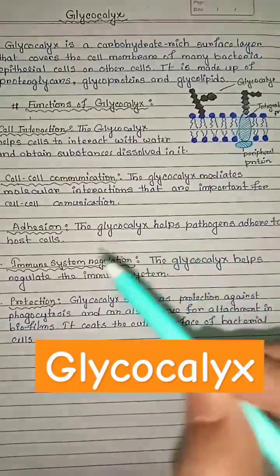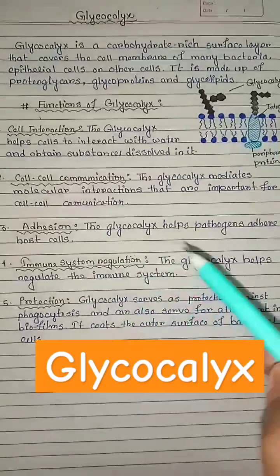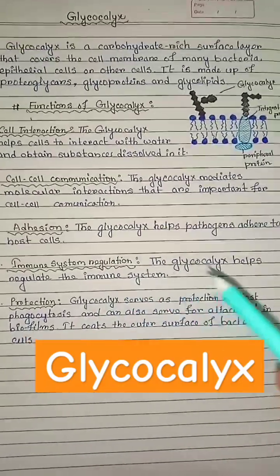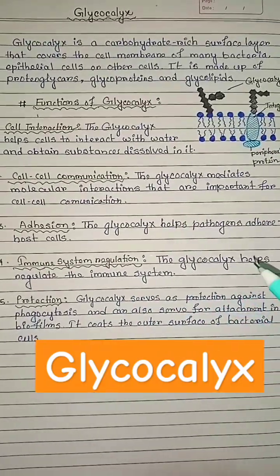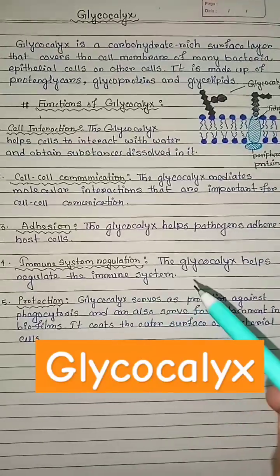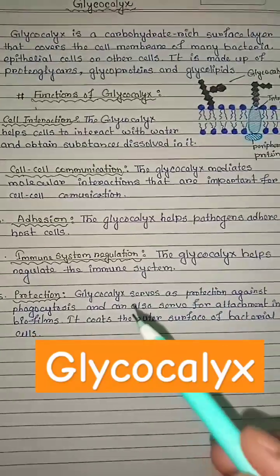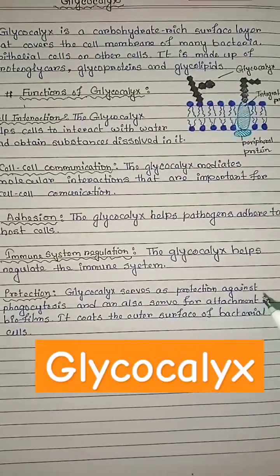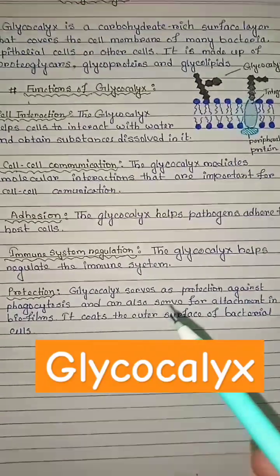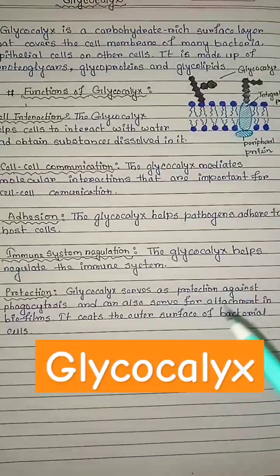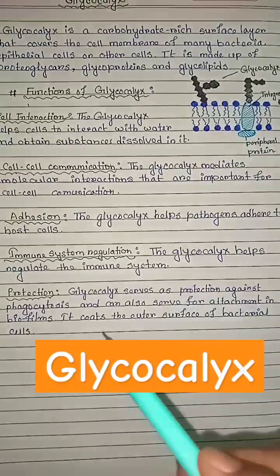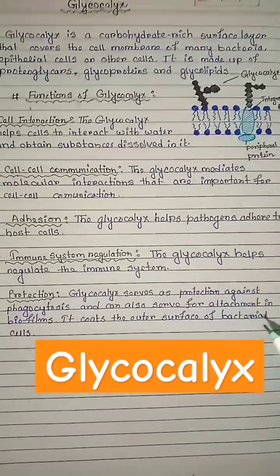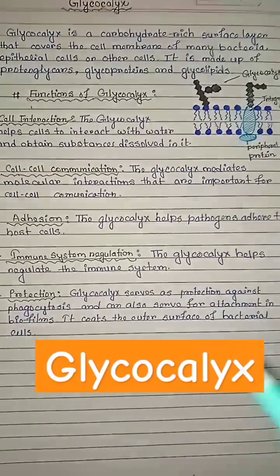Adhesion: the glycocalyx helps pathogens adhere to host cells. Immune system regulation: the glycocalyx helps regulate the immune system. Protection: the glycocalyx serves as protection against phagocytosis and can also serve as an attachment point in biofilm, coating the outer surface of bacterial cells.